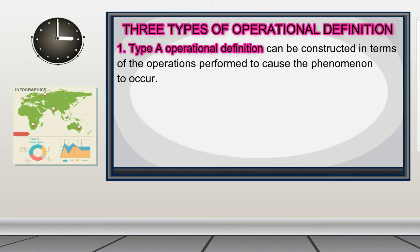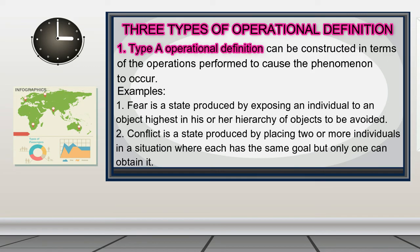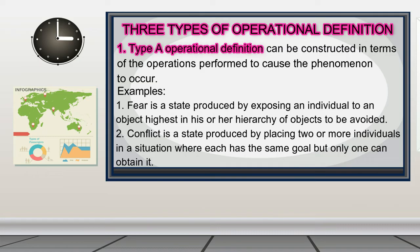There are three types of operational definition. Type A operational definition can be constructed in terms of the operations performed to cause the phenomenon to occur. For example: 'Theory is a state produced by exposing an individual to an object highest in his or her hierarchy of objects to be avoided.' 'Conflict is a state produced by placing two or more individuals in a situation where each has the same goal but only one can obtain it.'